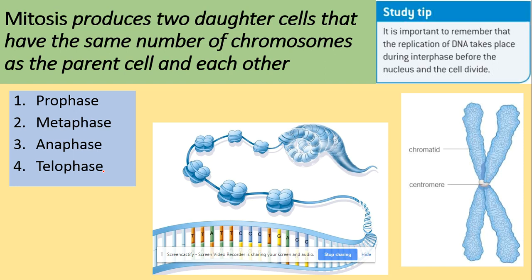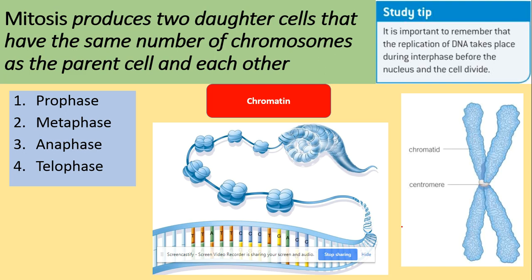Examiners often ask about the appearance of a chromosome. A chromosome consists of two sister chromatids joined by a centromere — that is how you describe its appearance. Chromatin is another key term: DNA is wrapped around proteins called histones, and the DNA-histone complex is called chromatin, which is a more condensed form of DNA. The most condensed form of DNA in the cell is a chromosome.